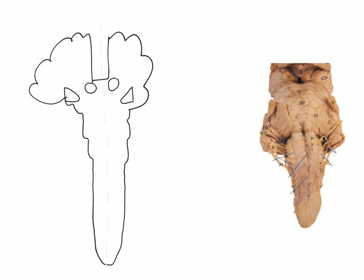Let's draw an upper motor neuron which supplies the upper limb. From the homunculus, this upper motor neuron will be found on the lateral aspect of the motor cortex. The axons pass down through the corona radiata and then into the internal capsule — the discrete white matter pathway running between the lentiform nucleus and the thalamus. It then enters the midbrain through the cerebral peduncle and goes down through the pons until it gets to the medulla.